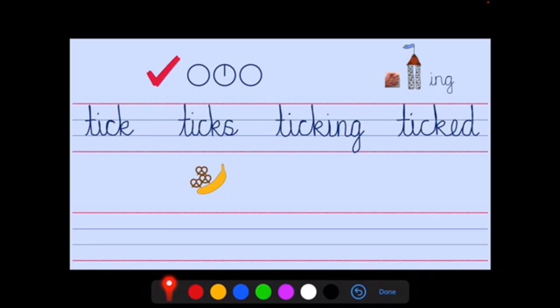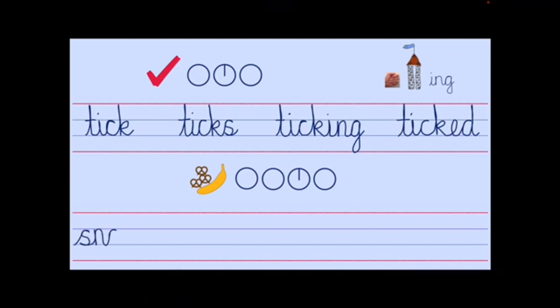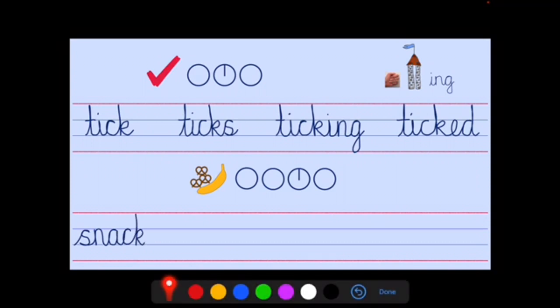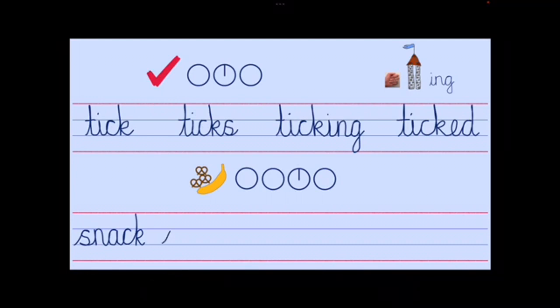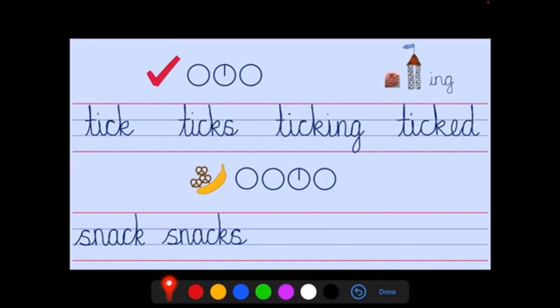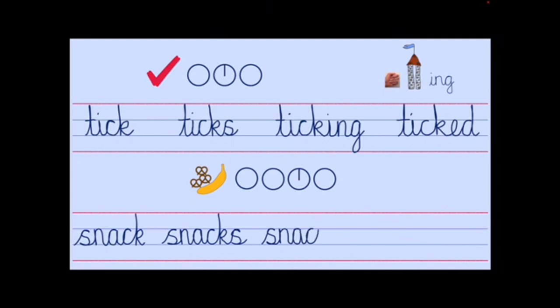Let's write snack. S, N, A, K. SN is S N, A, and yes, CK at the end of a one tap word with a short vowel sound. So when I write snacks, because there are two of them there, then I just add suffix S. And if I was writing about snacking, I just add suffix ING.